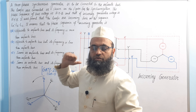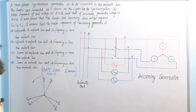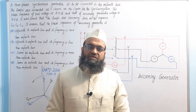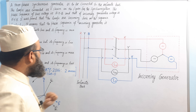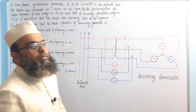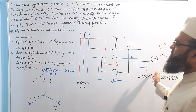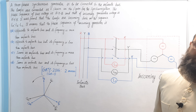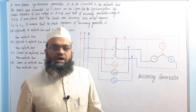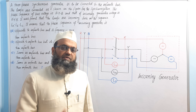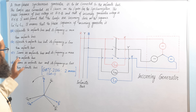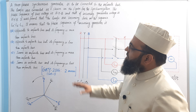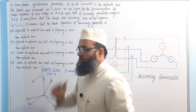The correct answer will be among the two remaining options. Option A says opposite to infinite bus — obviously if phase sequences are not the same, the phase sequence of the alternator is opposite to the infinite bus. Now we need to check whether the frequency of the incoming alternator is more or less than the infinite bus. We recall the all-dark-lamp method from the previous lecture in this series.